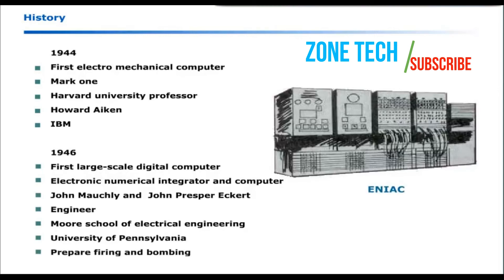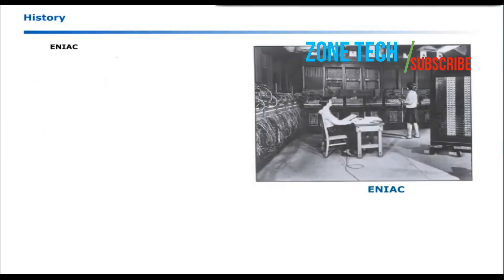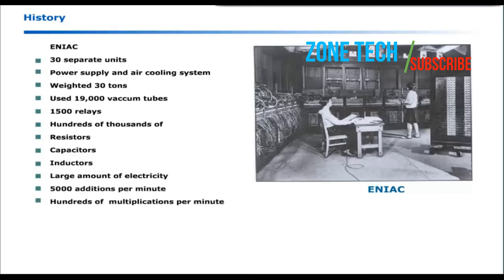ENIAC was used to prepare firing and bombing tables for the US Army and Navy. It was also used in secret research that was aimed at building powerful and destructive bombs. ENIAC consisted of 30 separate units, power supply and air cooling system. It weighed 30 tons, used 19,000 vacuum tubes, 1500 relays and hundreds of thousands of resistors, capacitors and inductors. It required a large amount of electricity. It could perform 5000 additions per minute and hundreds of multiplications per minute.